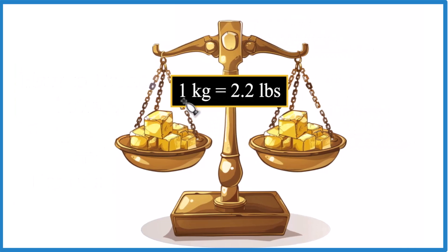And what you need to know, one kilogram is equal to 2.2 pounds. If you had a kilogram of gold, it would weigh 2.2 pounds. If you had 2.2 pounds of gold, you'd have one kilogram of gold.